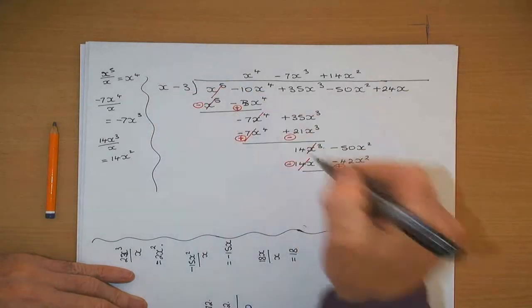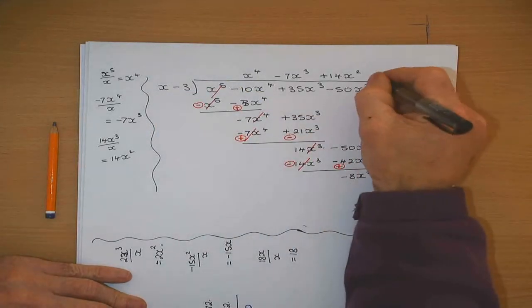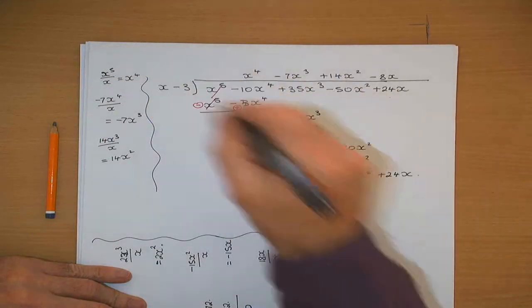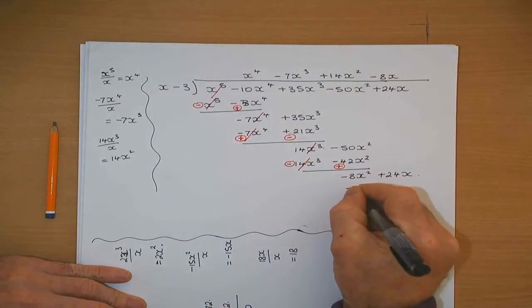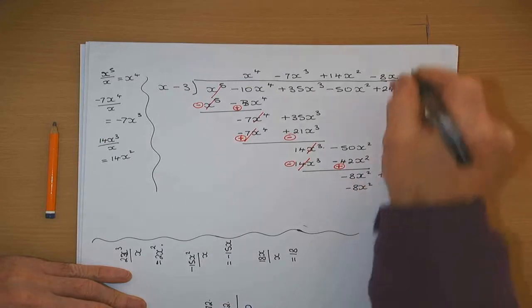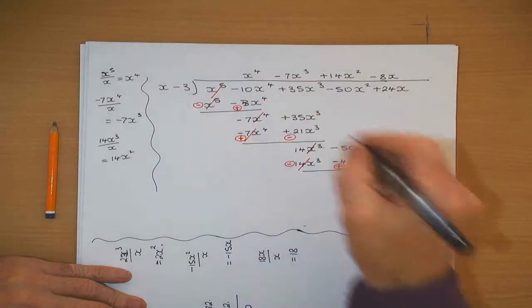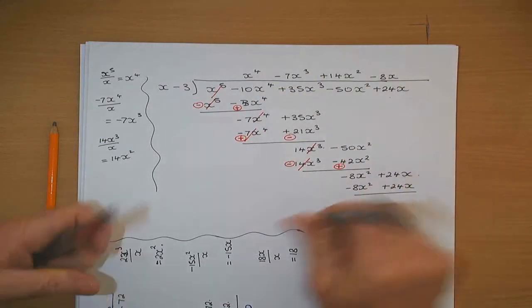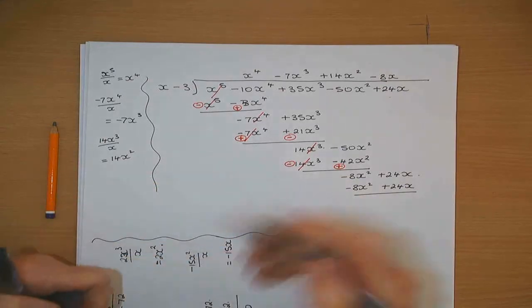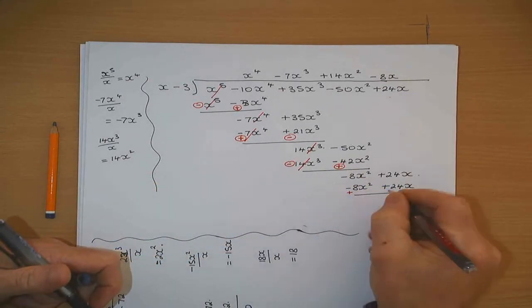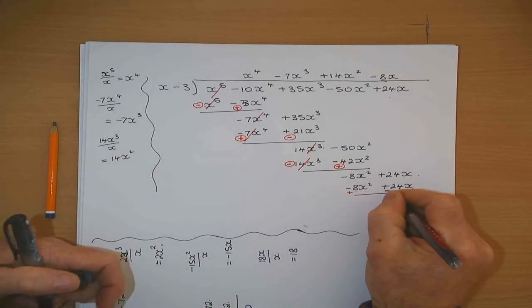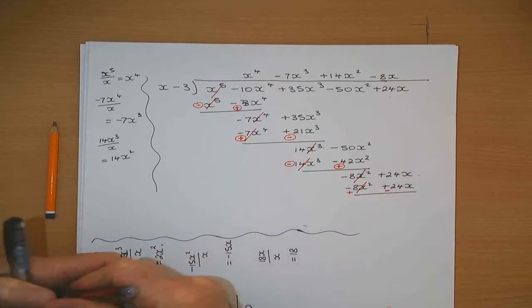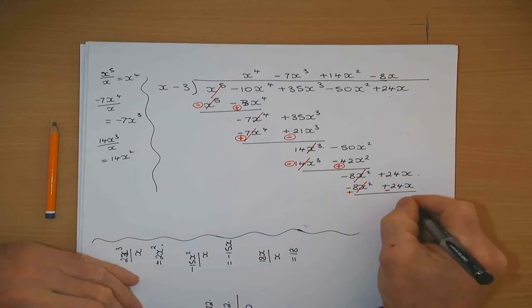x will divide into minus 8x squared. Minus 8x by x, then minus 8x by minus 3. Change the sign on the lower line and add — that becomes plus. Cancel. 24x minus 24x.